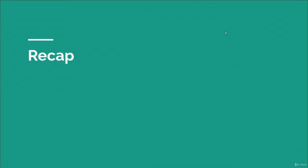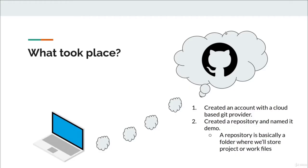To recap what we've done so far: the first thing we did was create an account with a cloud provider called GitHub. After creating the account, we created a repository and gave it the name 'demo'. So we now have a cloud-based GitHub repository.